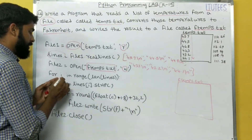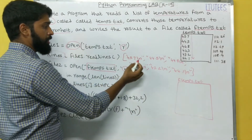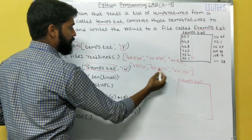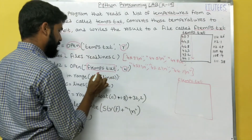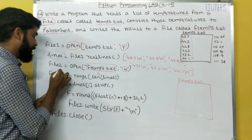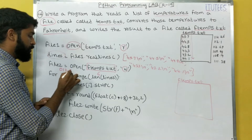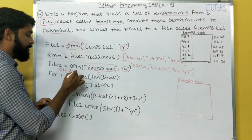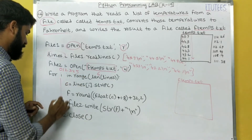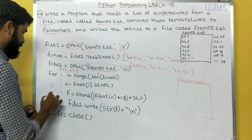After that, we use a for loop with range(len(lines)). The length of lines is 6, so i takes values 0, 1, 2, 3, 4, 5. That means we execute these instructions 6 times.